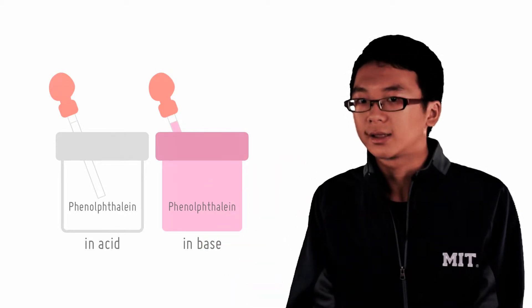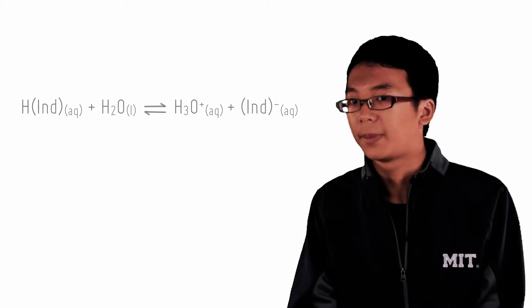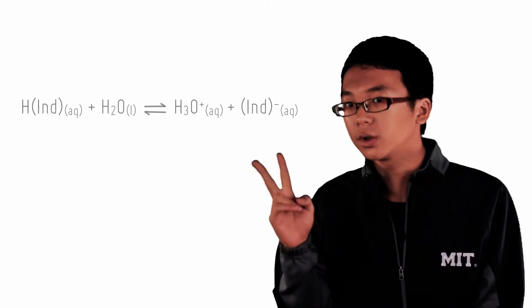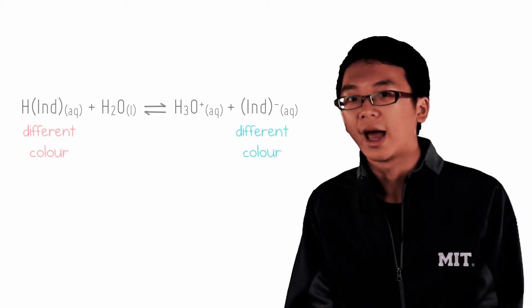Now all indicators are weak acids. That means they dissociate in water to form the conjugate base and hydronium. Naturally, that means they have two interchangeable forms, and what is cool is that these two forms have different colors.